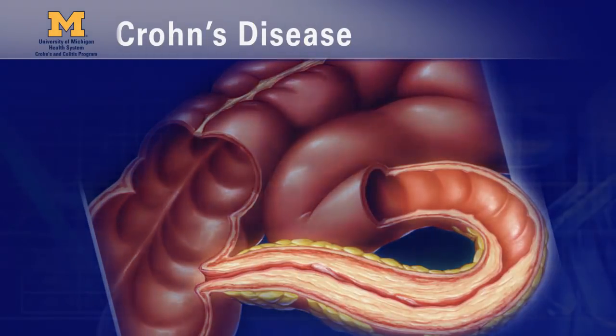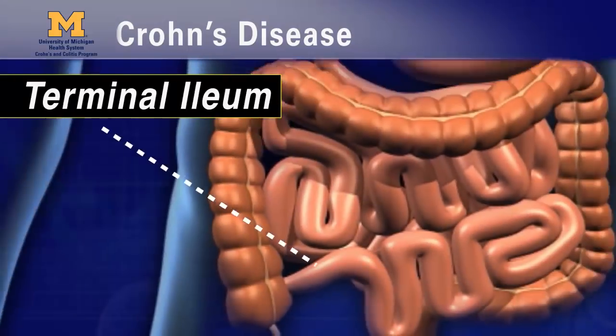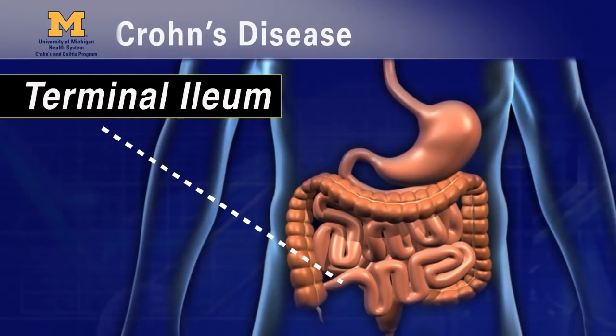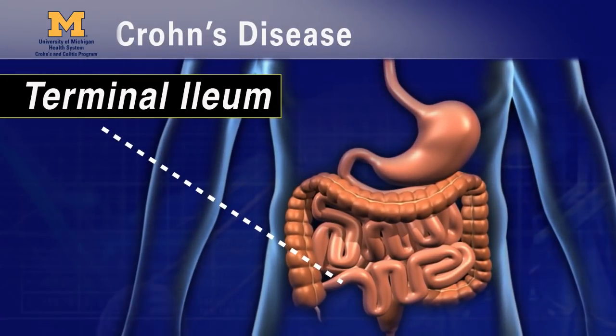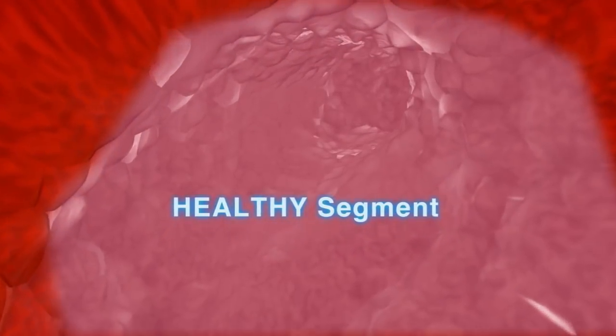The most common place for Crohn's disease to start is the terminal ileum, the last part of the small intestine, just upstream of where the large and small intestines meet. This is one of the most narrow parts of the GI tract, which can cause problems later on. Crohn's disease is also segmental, meaning one part of the intestine can be affected while segments just upstream or downstream appear completely healthy, even when small biopsy pieces are examined under a microscope.